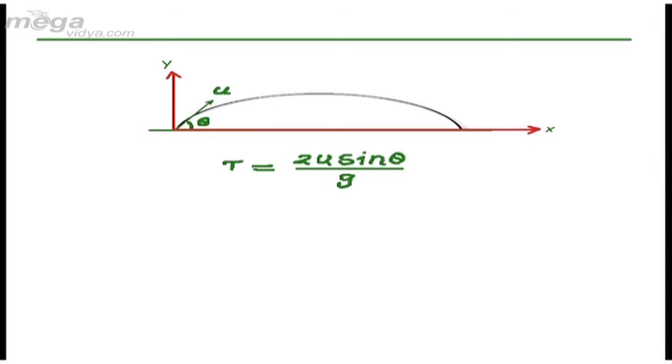There are two basic things. One is this term u sin theta. I would like to call it u perpendicular, which means velocity of projection perpendicular.